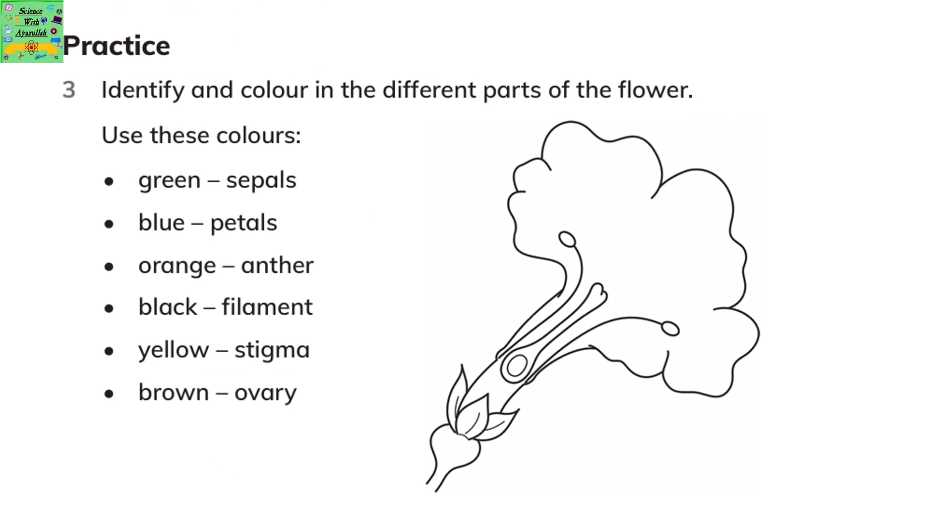Identify and color in the different parts of the flower using these colors: green for the sepals, blue for petals, orange for the anther, black for the filament, yellow for the stigma, and brown for the ovary.